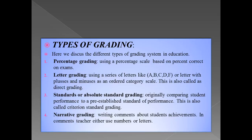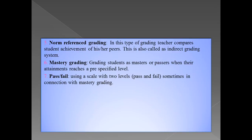Third, we have standard and absolute standard grading. In this grading, the teacher compares the student's performance to a pre-established standard. Before the assessment, the teacher sets the standard, and after the assessment, the teacher compares the student's performance to those standards and then assigns a grade. This grading is also called criterion standard grading. Fourth, we have narrative grading — in narrative grading, the teacher writes comments on the student's achievement, which can be given in the form of numbers or letters. Fifth, we have norm reference grading — in norm reference grading, the teacher compares a student's achievement to their peers, comparing their progress and assessment results to other students before assigning a grade. This grading is also called indirect grading system.